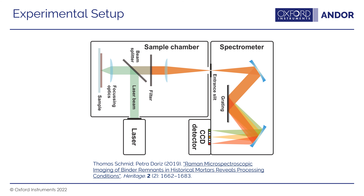Here's a drawing of a typical Raman experimental setup. You have a laser that comes in, goes off a beam splitter, and is focused through a focusing optic onto the sample where the Raman process takes place. Light goes back through the beam splitter and through a filter, chosen to block the excitation wavelength — because most of the scattering from the sample is elastic, most of the light coming back is the laser beam wavelength. So you use either an edge filter or a notch filter.